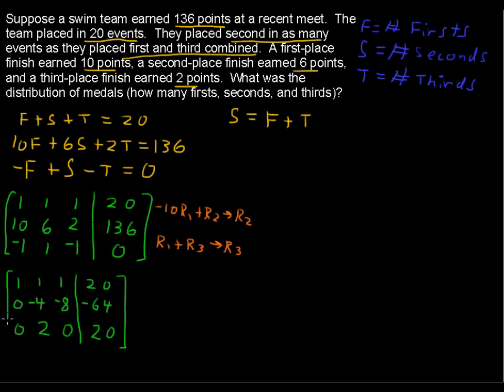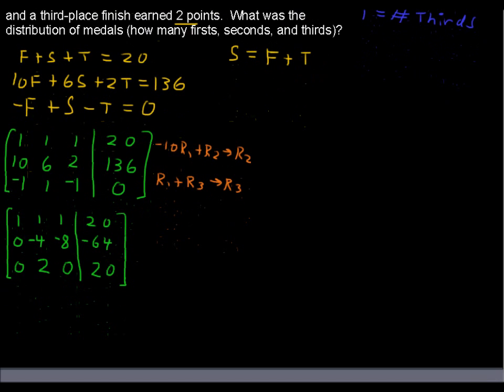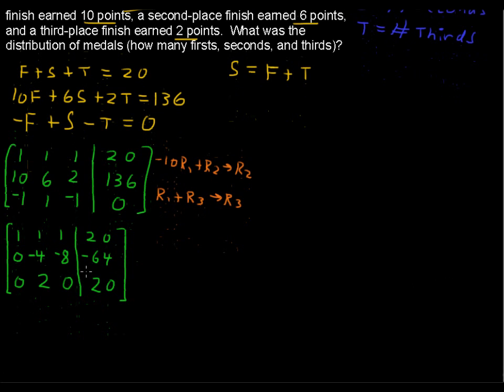Moving along, we have our matrix there. We want a 1 right here where this negative 4 is. So I'm going to say negative 1 fourth times row 2 will replace row 2. So we're doing this very systematically. The first row stays the same. The second row, we're multiplying by negative 1 fourth. So that's 0, 1, 2, 16. Third row, we didn't mess with it.